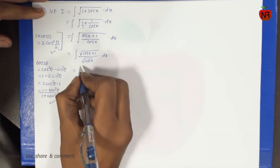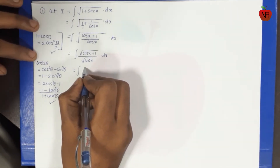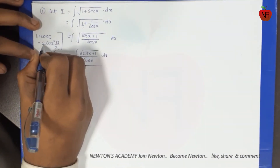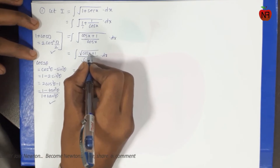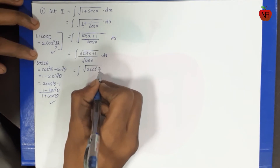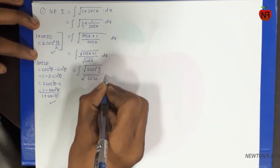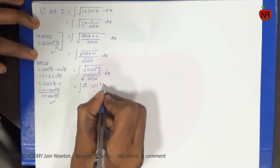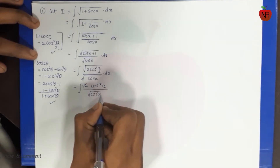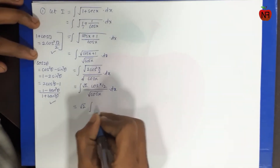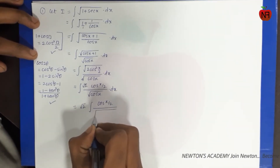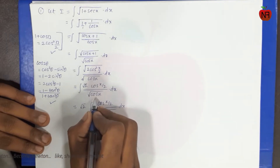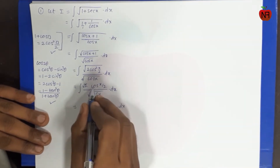Is me se kaun sa formula use karunga? Abhi aapko detail me bataunga. Root of (1 + cos x) = √(2cos²(x/2)) — single angle cos. So: 2cos²(x/2), whole divided by root of cos x, into dx. Root 2 alag constant ho gaya, root a cancelled, cos(x/2) divided by root of cos x into dx.